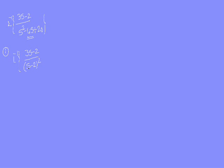Completing the square: s² minus 4s plus 20 equals (s minus 2)² plus 16. In the numerator, substituting s equals (s minus 2), we write 3(s minus 2) plus 4, since 3s minus 6 plus 4 equals 3s minus 2. So we have L inverse of [3(s minus 2) plus 4] by [(s minus 2)² plus 4²].